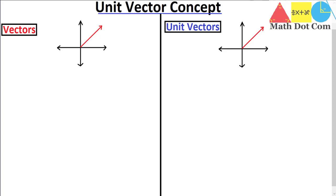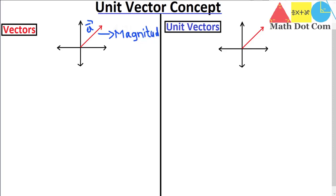A vector is basically a quantity having magnitude plus direction. If we say this red line is a vector — let's call it vector a — this line has some magnitude, which could be any value, and it also has a direction. So magnitude plus direction gives you a vector. This is the simplest definition of a vector, and this line represents one.